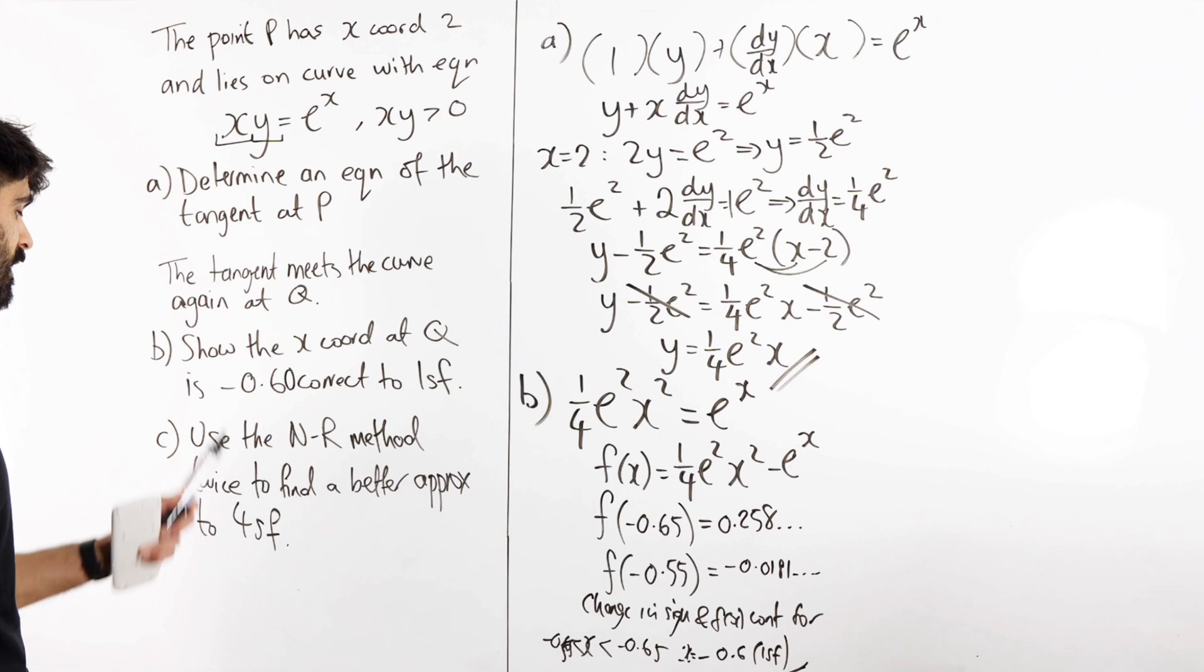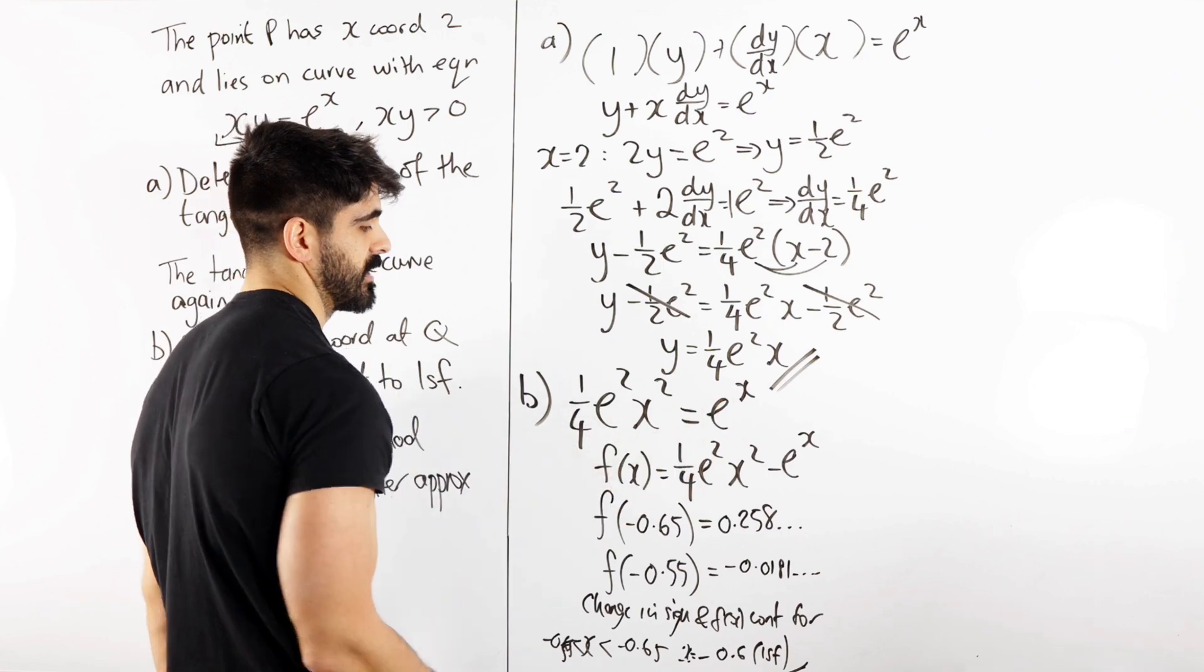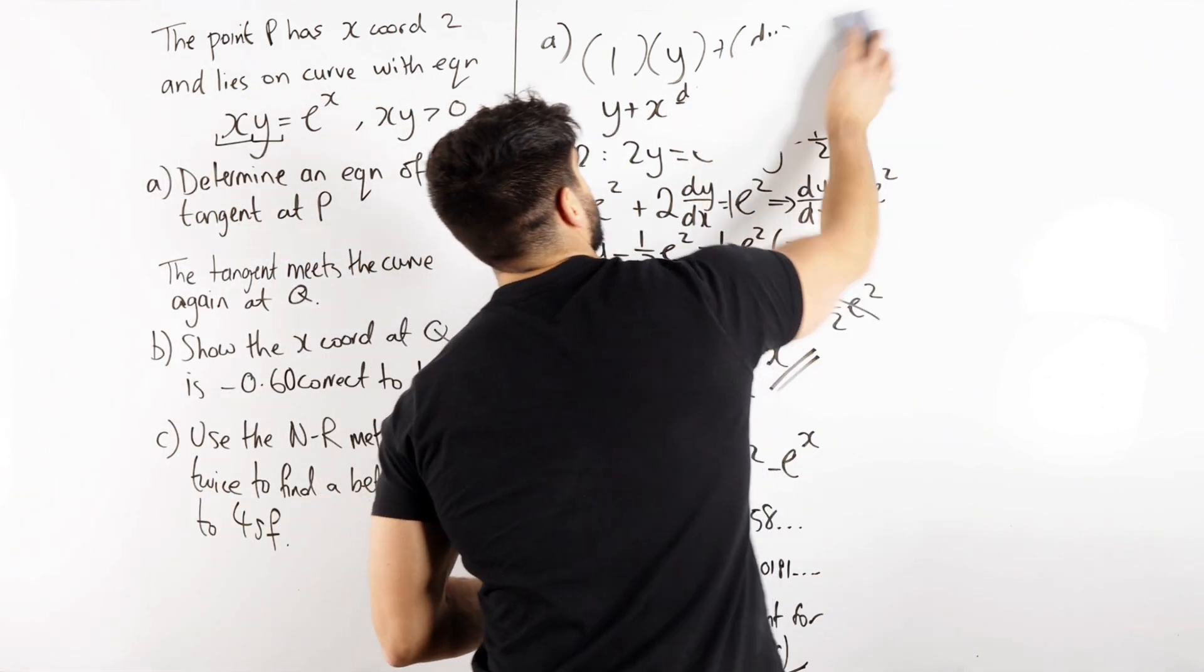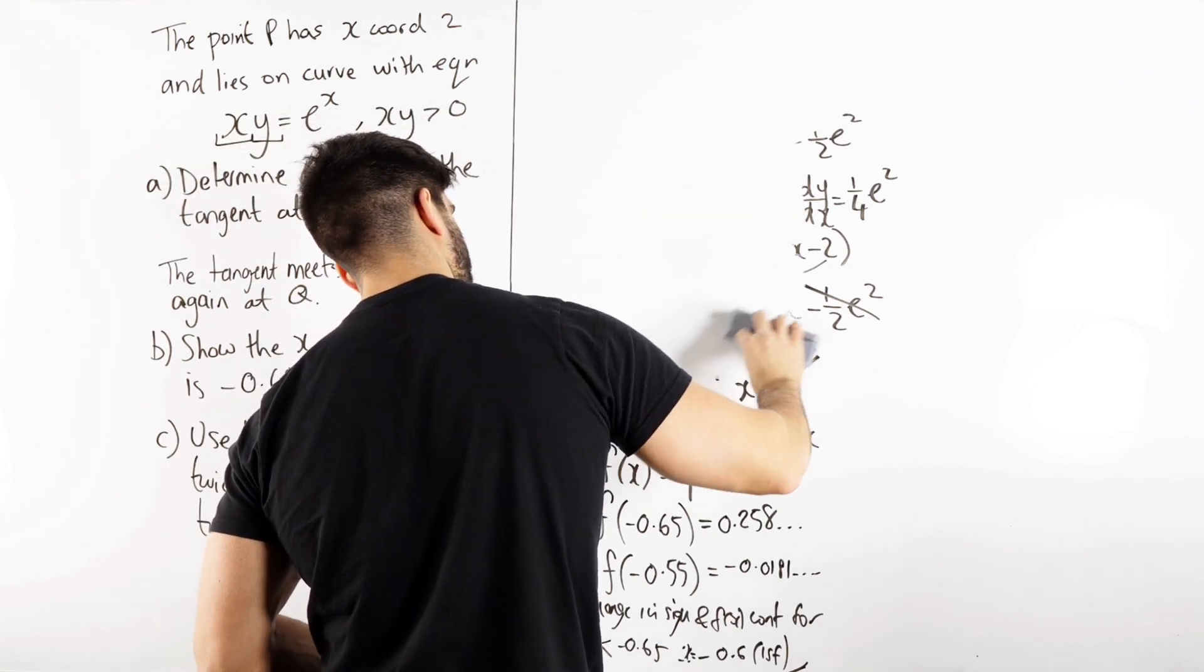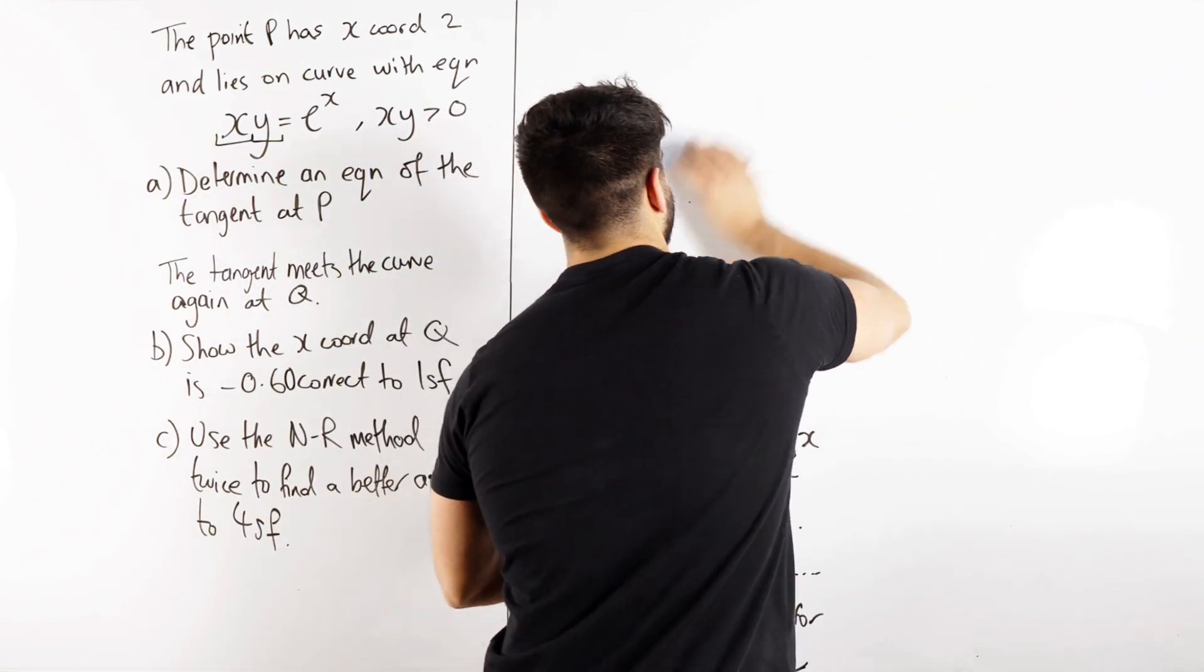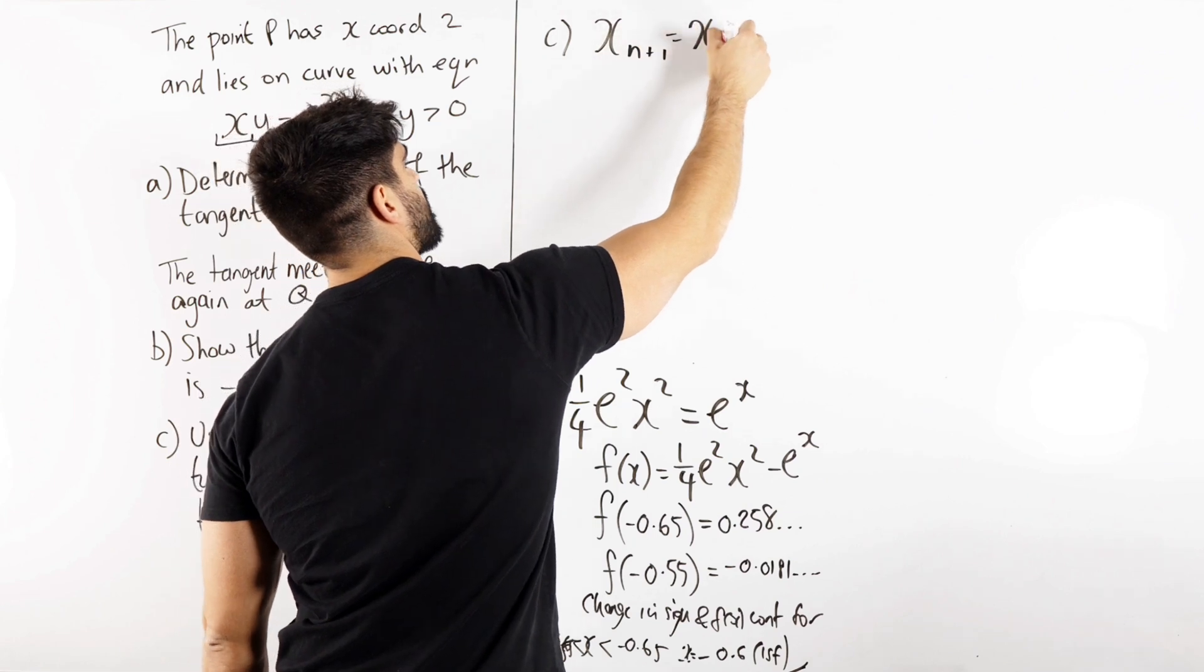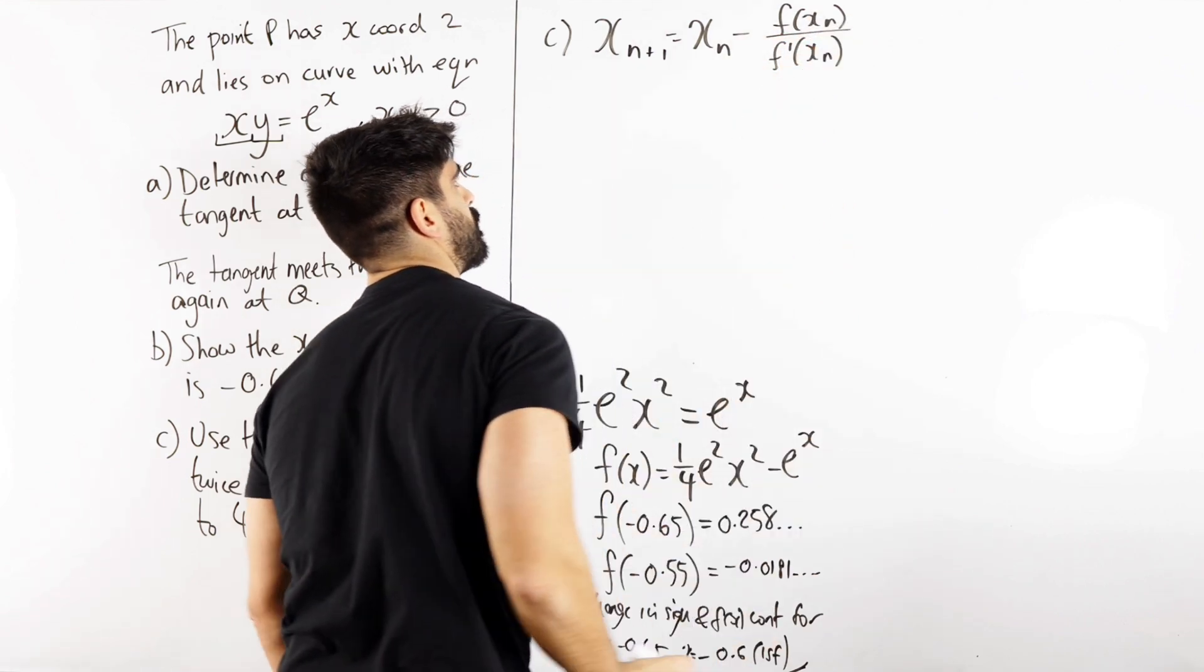Use the Newton-Raphson method twice to find a better approximation to this. Okay, to find a better approximation to this equation. So we have our f of x is this. What does the Newton-Raphson method say? Now you guys should, if you've done enough revision, you'll be able to remember this formula is very simple. Remember, if you need a formula booklet, you've not revised enough. So the Newton-Raphson method says, to find the next term, you do the previous term minus f of that previous term over f dash of that previous term.